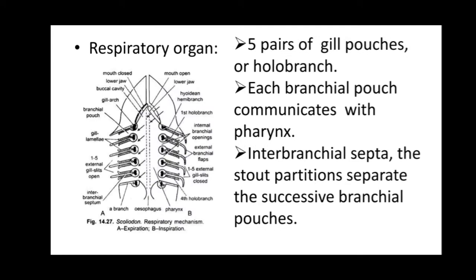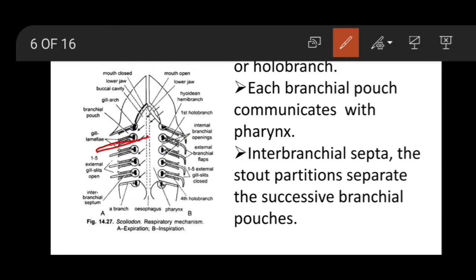There are five pairs of gill pouches or holabranches. Each branchial pouch communicates with the pharynx. This blank portion is known as the branchial pouch, and this branchial pouch communicates with the pharynx. The interbranchial septa act as partitions that separate the successive branchial pouches.